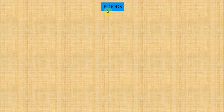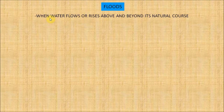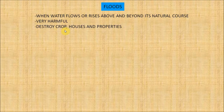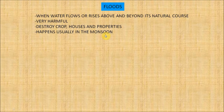Now let's see about floods. Flood occurs when water flows or rises above and beyond its natural course and covers land that is normally dry. Floods are very harmful — they destroy crops, houses and other properties, and even carry off the topsoil, leaving the land barren. Floods happen usually in the monsoon when a river overflows its banks and water spreads over the surrounding area, as rivers are unable to discharge water into the sea due to heavy rainfall or melting of snow.